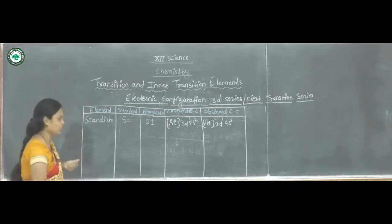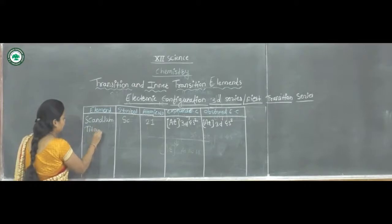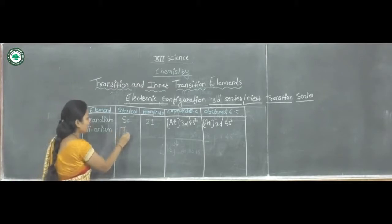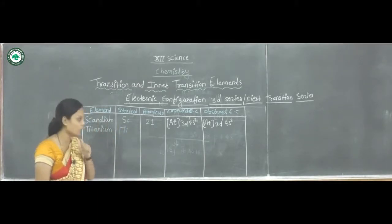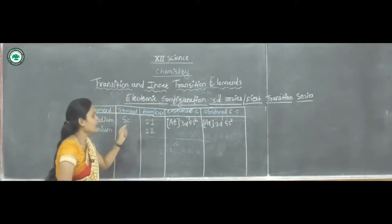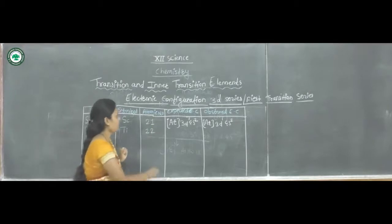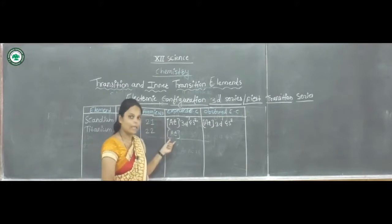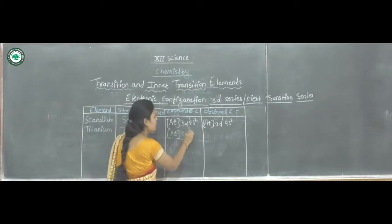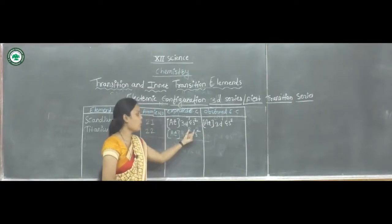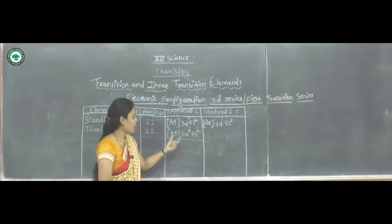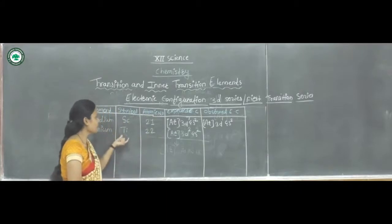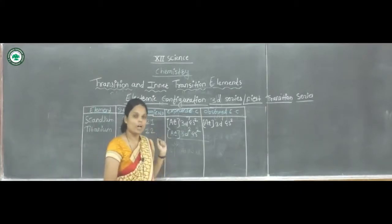The second element is Titanium, symbol Ti, atomic number 22. The expected electronic configuration is [Ar] 3d² 4s² — 18 electrons from argon plus 4 additional electrons gives atomic number 22. The observed electronic configuration is the same: [Ar] 3d² 4s².